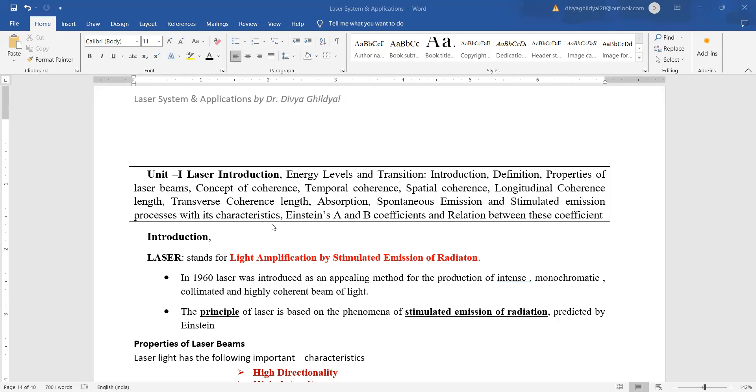Laser. This unit consists more of your specification on coherence, temporal coherence, spatial coherence, longitudinal coherence and numericals on the same. Other important thing is relationship between Einstein coefficients. So these two points, spatial coherence, temporal coherence and relation between Einstein coefficient and small numericals on the basics of laser are important points in this unit.